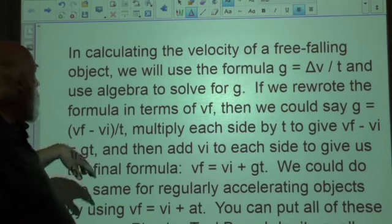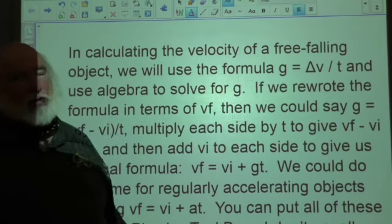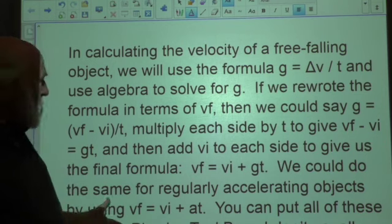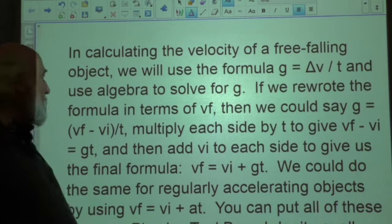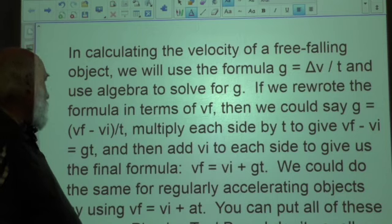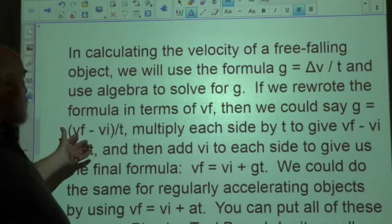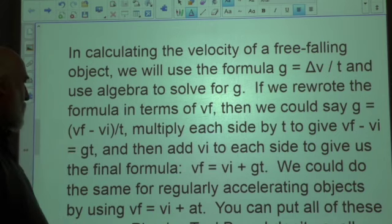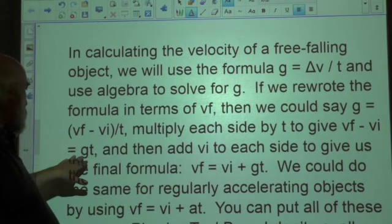Okay? So in calculating the velocity of a free-falling object, we use the formula g = Δv/t instead of a = Δv/t, knowing that g is going to be 9.80 meters per second squared. And so if we have the formula g equals Δv, which is vf minus vi over t, we multiply both sides by t, you get vf minus vi equals gt.